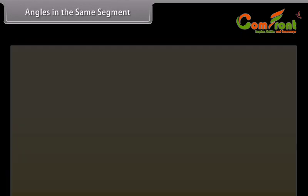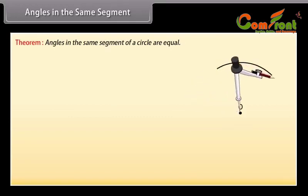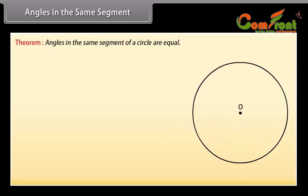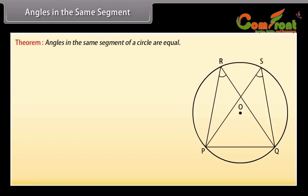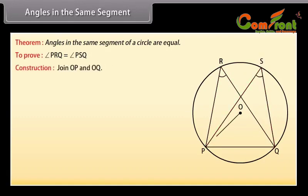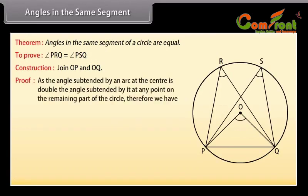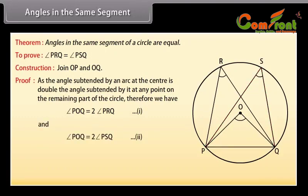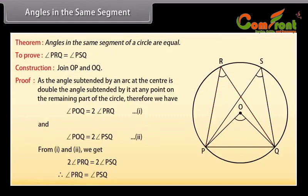Angles in the same segment — Theorem: angles in the same segment of a circle are equal. Given: a circle with center O and angles PRQ and PSQ in the same segment formed by chord PQ. To prove: angle PRQ equals angle PSQ. Construction: join OP and OQ. Since the angle subtended by an arc at the center is double the angle subtended at any point on the remaining part, angle POQ equals 2 times angle PRQ, and angle POQ equals 2 times angle PSQ. From these two equations, 2 times angle PRQ equals 2 times angle PSQ, therefore angle PRQ equals angle PSQ.